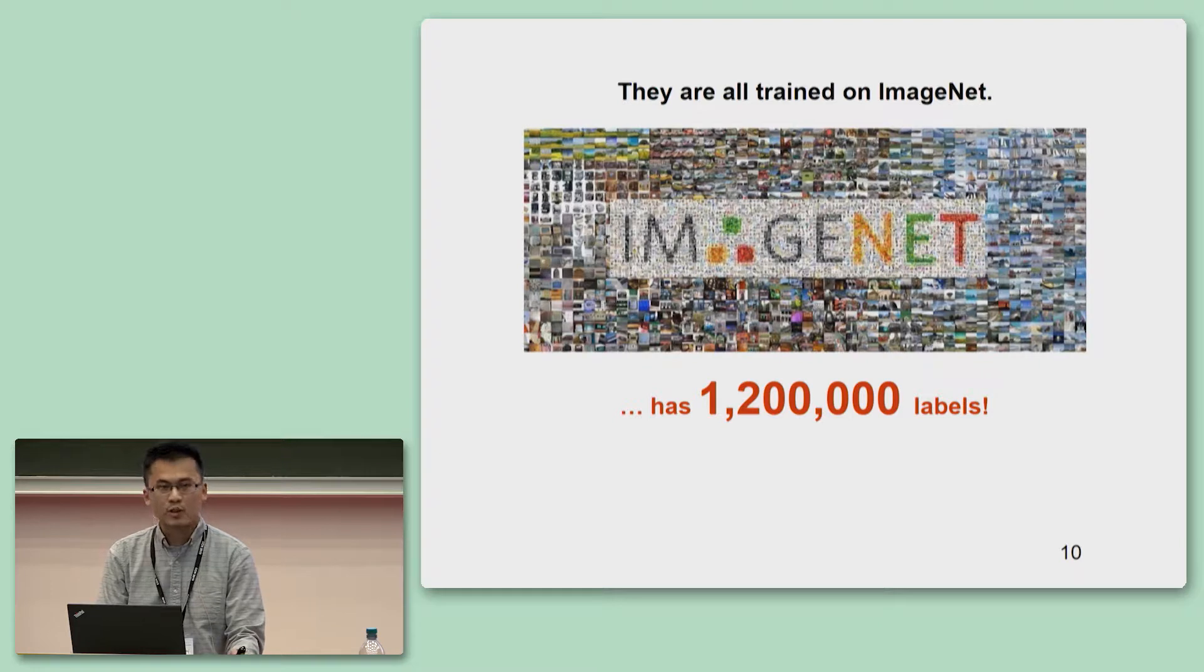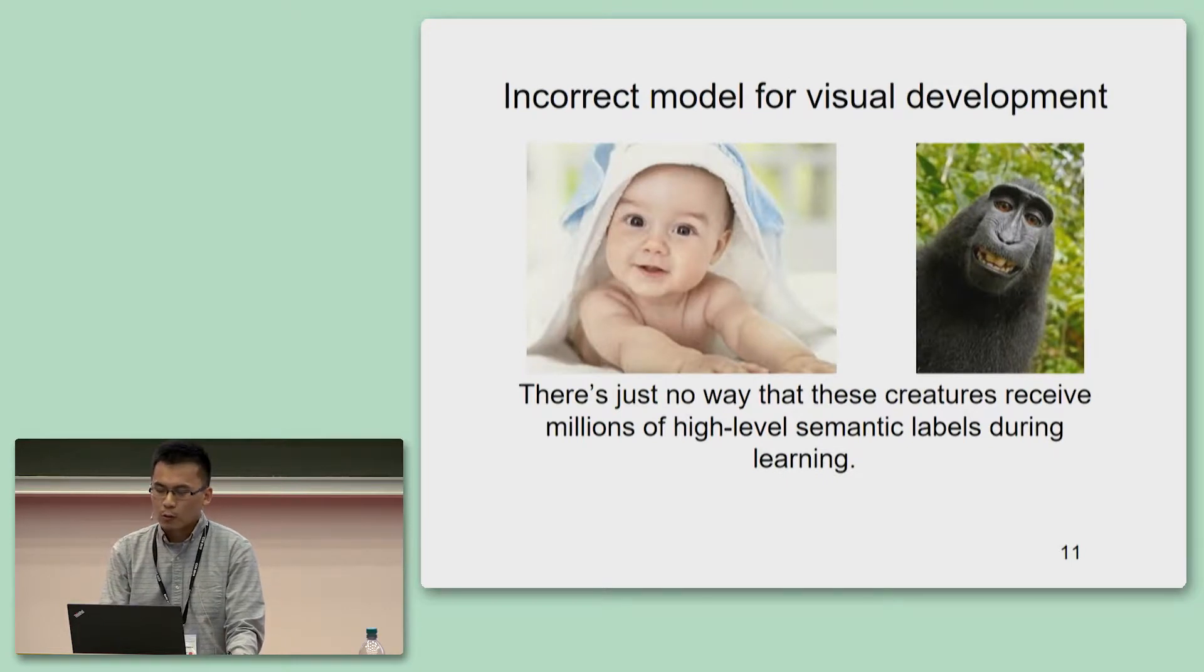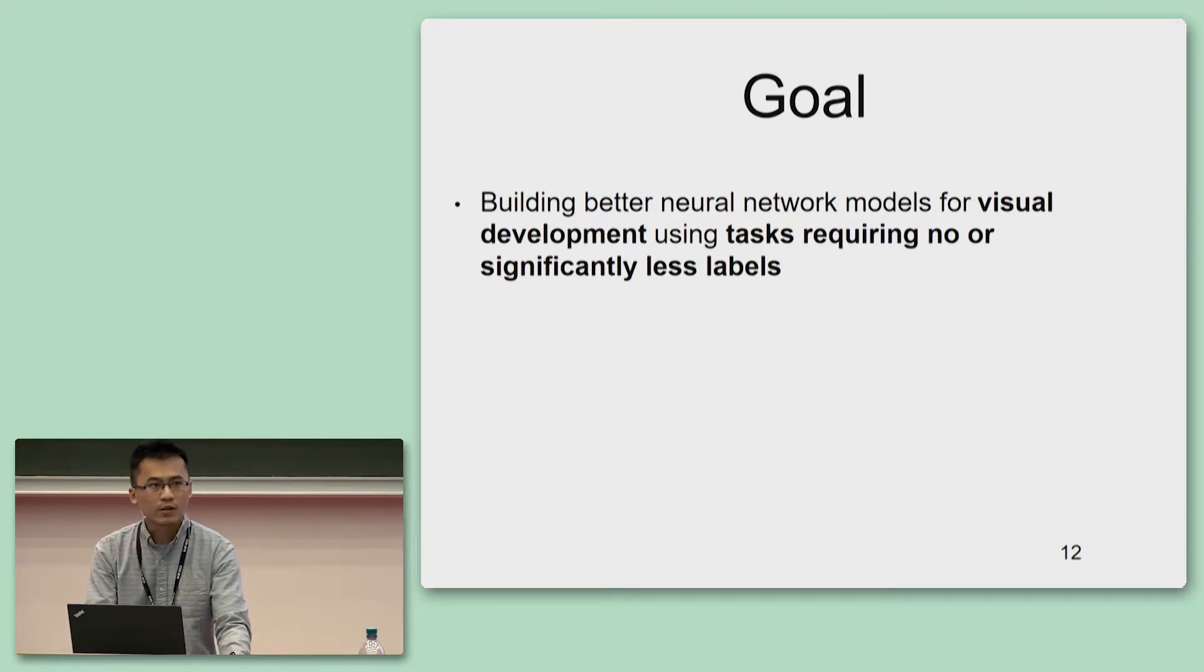More specifically, these networks are all trained using ImageNet, which contains 1.2 million labels. There is just no way that infants or primates can get millions of labels during their development, which makes these networks incorrect models for visual development. In this talk, we aim to address this problem through building better neural network models for visual development using tasks requiring no or significantly less labels.